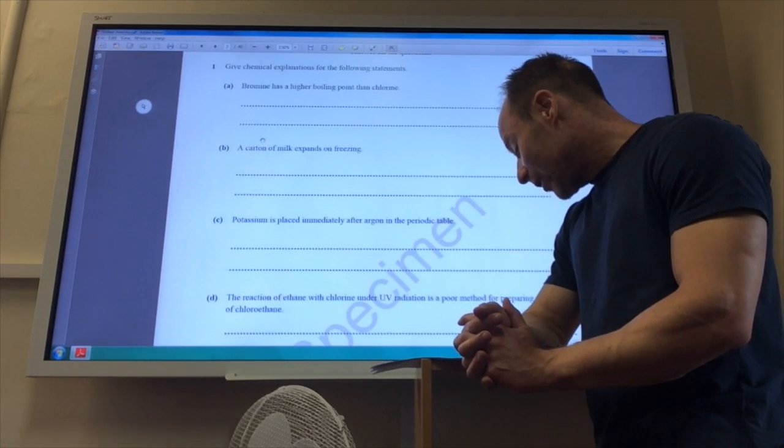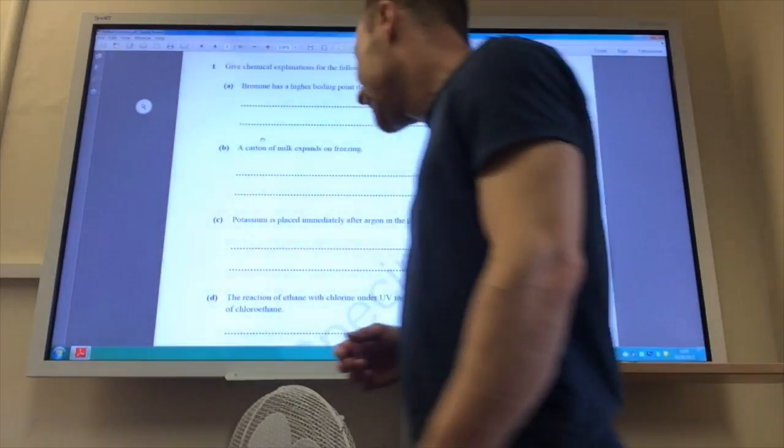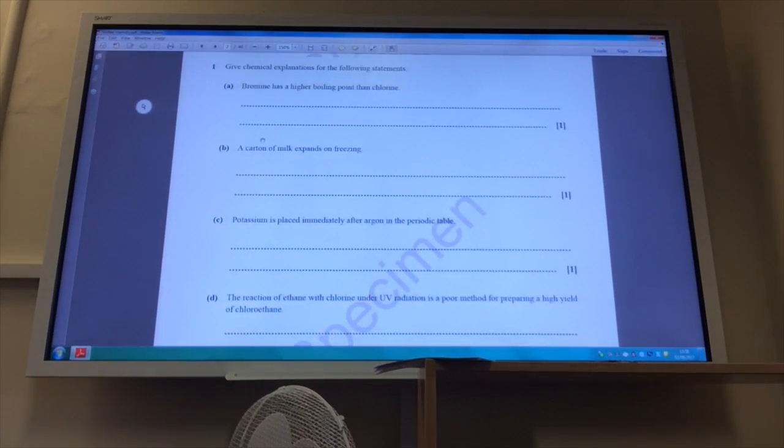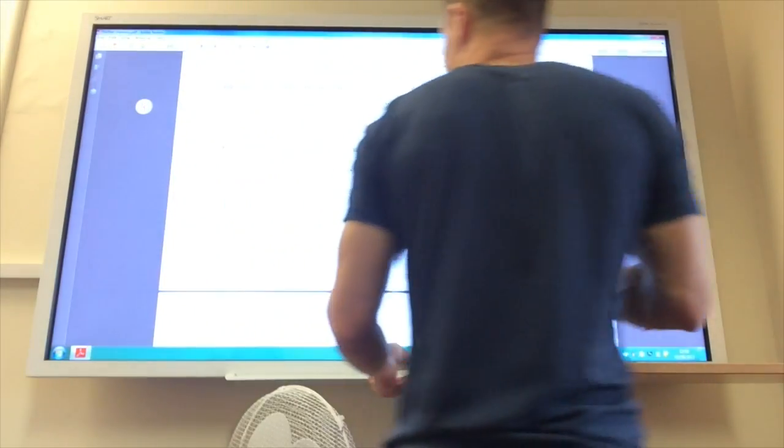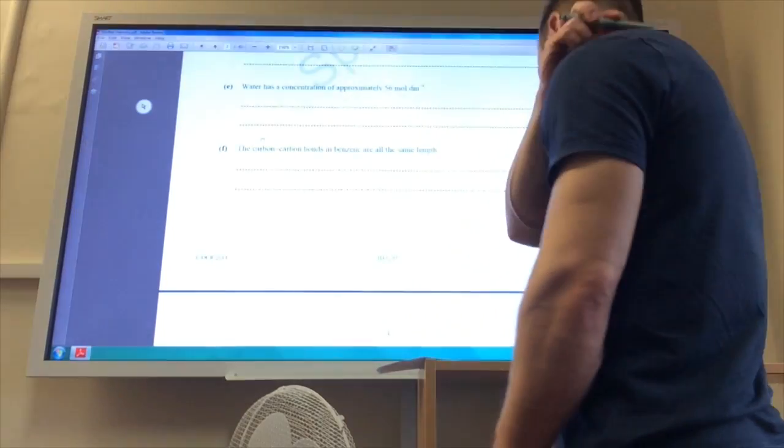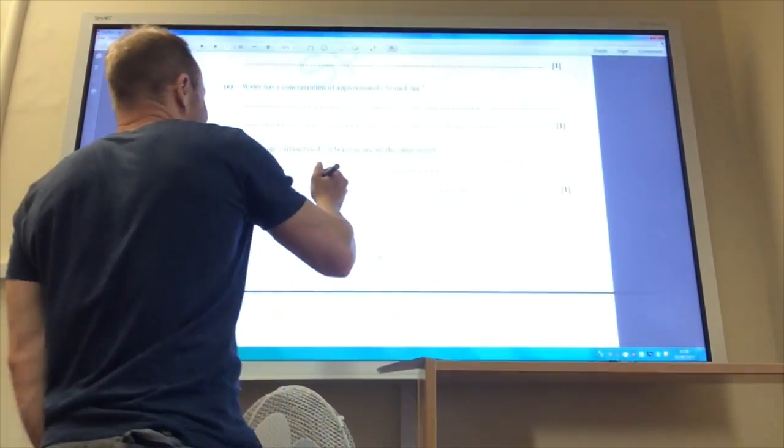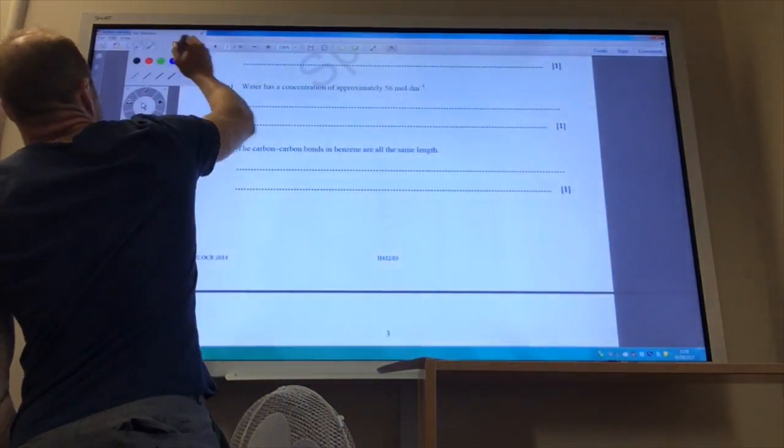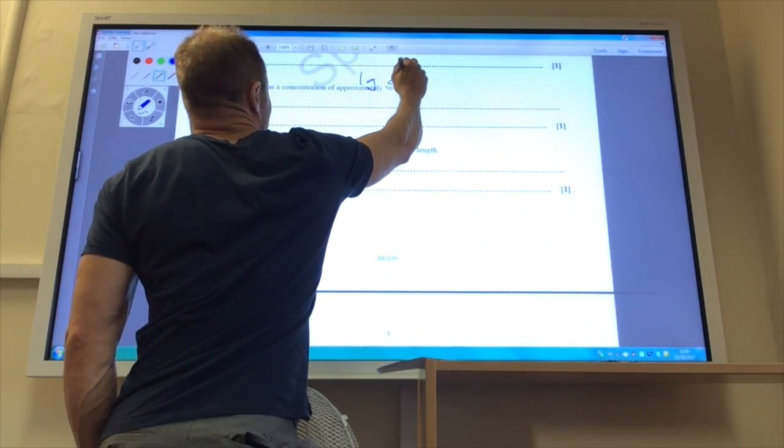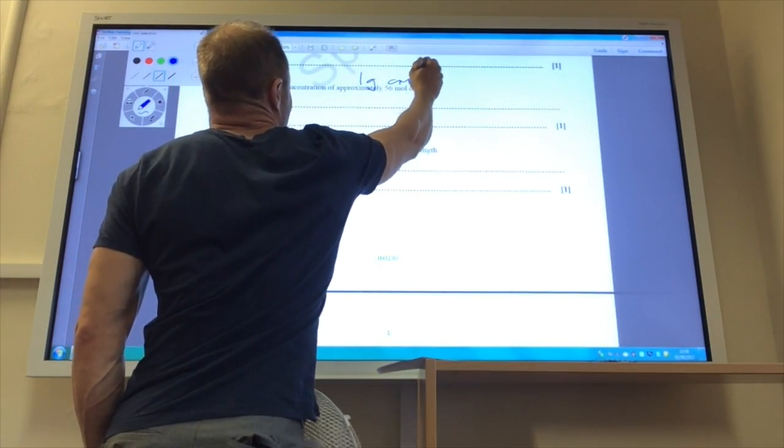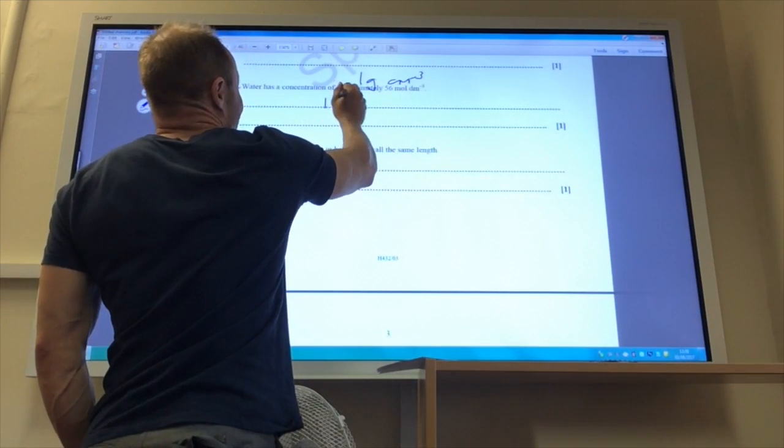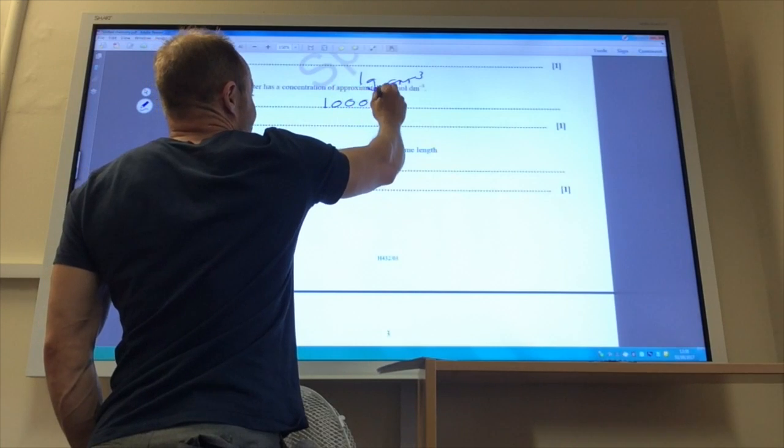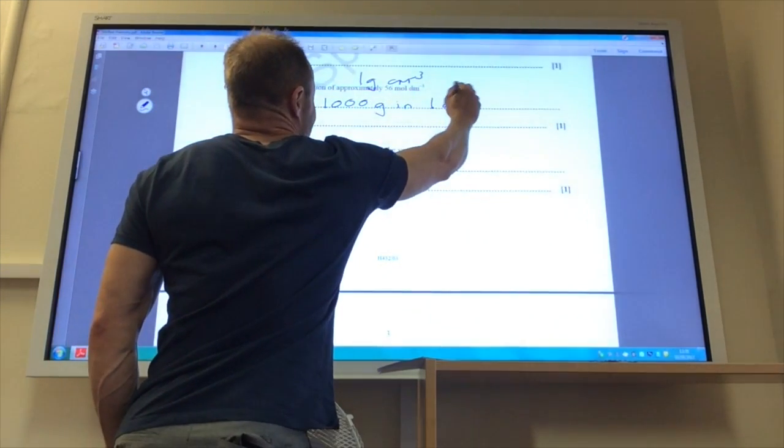Water has a concentration of approximately 56 moles per decimetre cubed. This is perhaps one where we need to do a little bit of work on the board. Water, of course, has a density of one gram per centimetre cubed. Therefore, one decimetre cubed contains a thousand centimetres cubed, so it will have a thousand grams in one decimetre cubed.